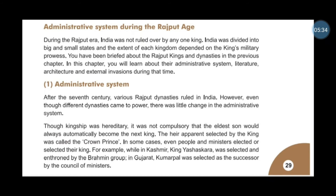However, even though different dynasties came to power, there was little change in the administrative system. Though kingship was hereditary, it was not compulsory that the eldest son would always automatically become the next king.